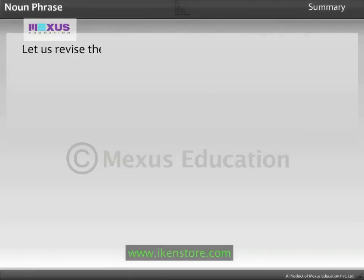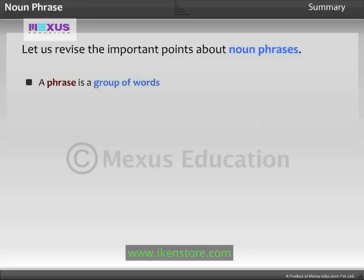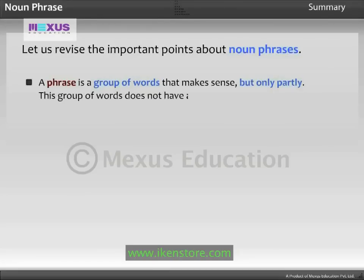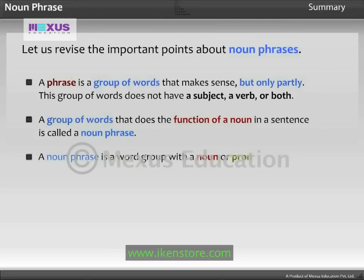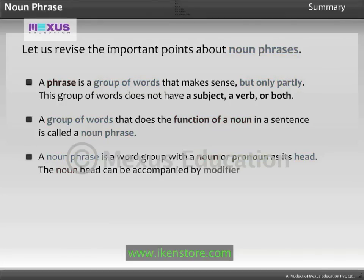Let us revise the important points to help Sid remember the key concepts. A Phrase is a group of words that makes sense but only partly; this group of words does not have a subject, a verb, or both. A group of words that does the function of a noun in a sentence is called a Noun Phrase. A Noun Phrase is a word group with a noun or pronoun as its head, and the noun head can be accompanied by modifiers, determiners and complements.